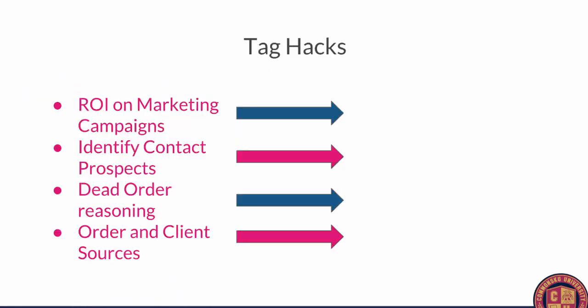Tag hacks — tagging is something I talk to a lot of distributors about. There are a bunch of different ways to handle tags. The first is client tags: you can tag a client to group them, or use it for ROI on marketing campaigns — tag every client you do self-promo with and then use that tag inside our reporting section to see if you've grown your business with that client year over year. Or use contact tags: maybe five people at a client order promo from you but you're only getting business from three. Tag those other two individuals so you can target market those specific prospects.